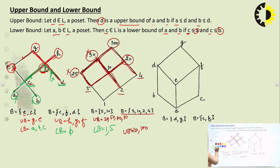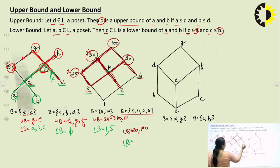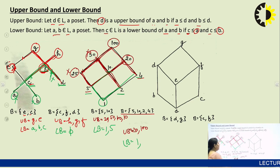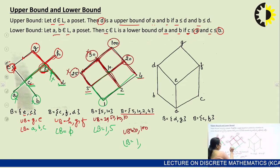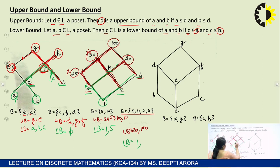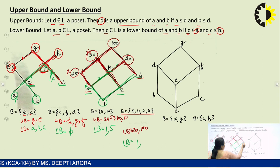For the lower bound of {5, 10, 2, 4}, the only element in a lower position is 1. Is 1 related to 5, 10, 2, and 4? Yes to all. So 1 is in the lower bound. Checking reflexivity: 5 is not related to 2 or 4, so 5 is out. 2 is not related to 5. 4 is not related to 10. So only 1 is in the lower bound of {5, 10, 2, 4}.